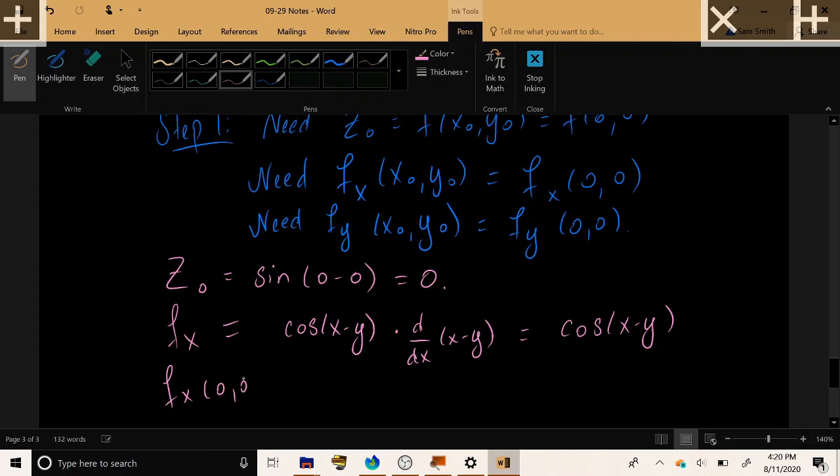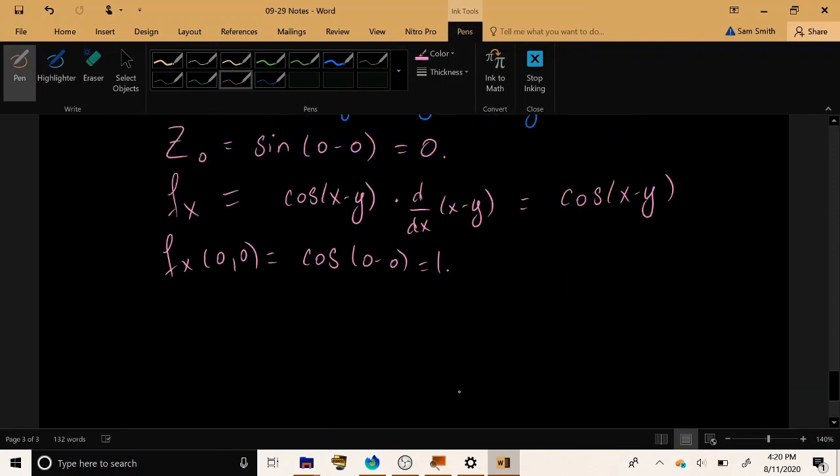If we plug in our given point, 0, 0, we get cosine of 0, which is 1. Okay.